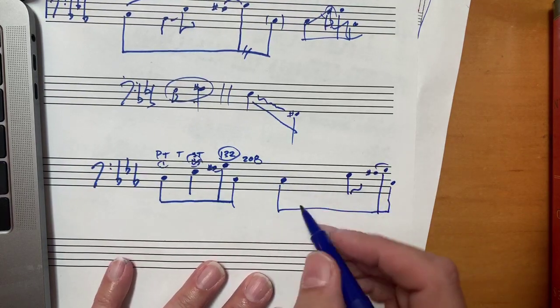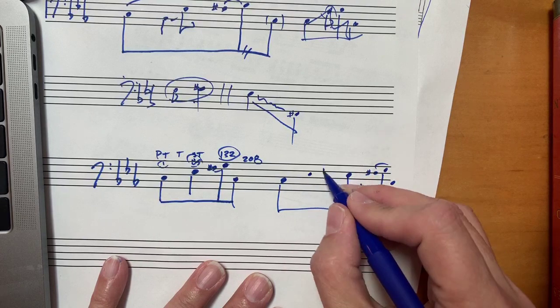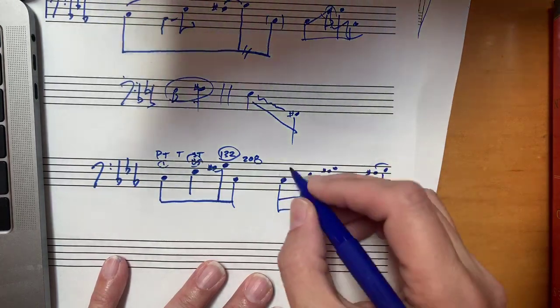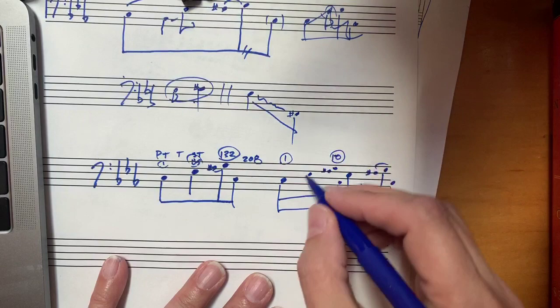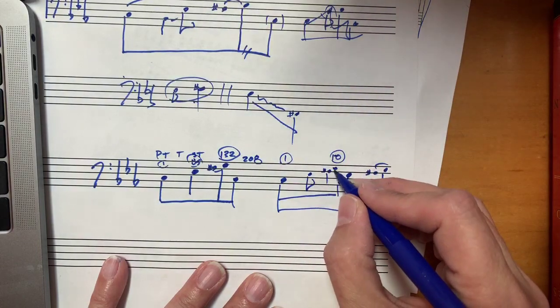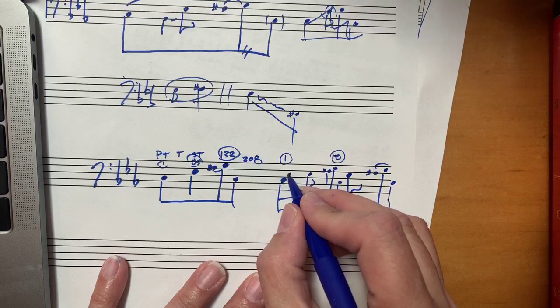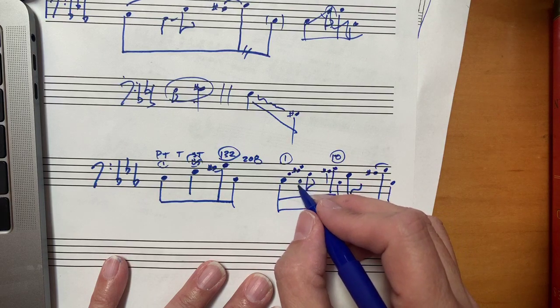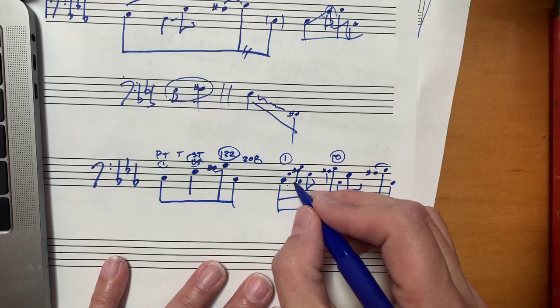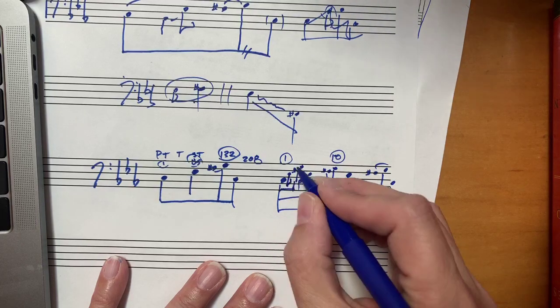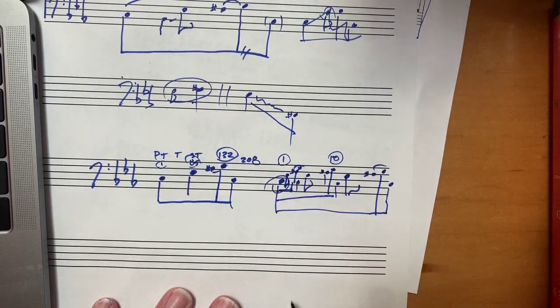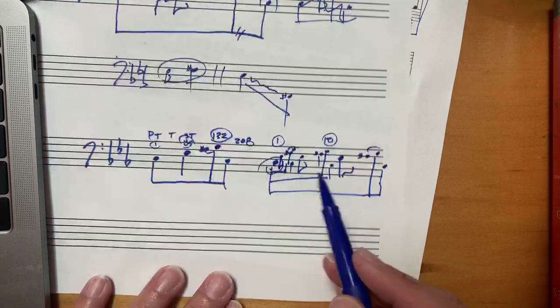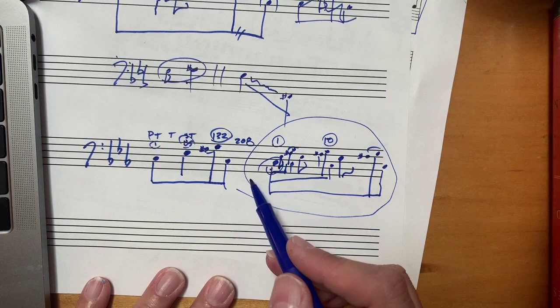And then within this initial C, we have one, three, five, one, over measures one through ten. And then we have one, three, five, one in measure one. So this initial C kicks off a one measure statement of this background figure, a ten measure statement of this background figure, and a statement of it that spans the entire movement.